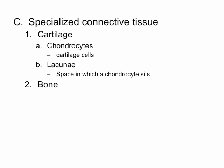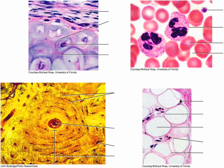Bone is another type of specialized connective tissue. The cells inside of bone are called osteocytes — 'osteo' refers to bone, and 'cyte' refers to cell. Lacuna is the same concept in bone as in cartilage: the cells inside the matrix sit in a space called a lacuna. The difference is that bone has a solid matrix, whereas cartilage has a more semi-solid matrix. In the image, the bottom left shows bone with its characteristic circular pattern, and above that is cartilage.